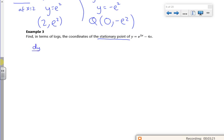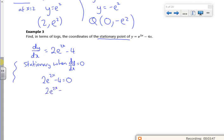So I want to do dy by dx. So that means 2e to the 2x minus 4. It's stationary when dy by dx is equal to 0. So 2e to the 2x minus 4 is 0. So remember, you've got to have that statement in. Right, so we'll do some rearranging.